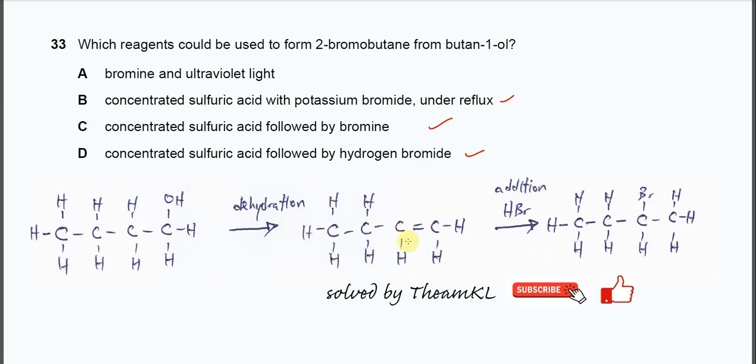So first you need to form this C=C double bond and then the addition needs to be the next step. So for this butene-1, we need to add the hydrogen bromide.